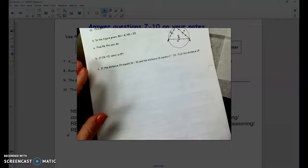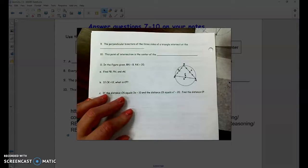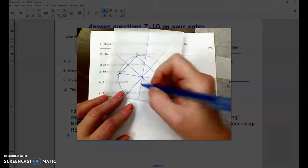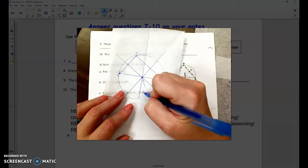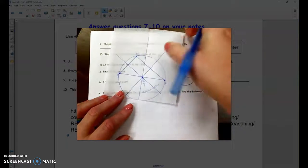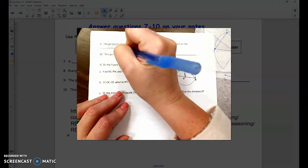Number 9, the perpendicular bisectors of the three sides of a triangle intersect at the, and that was this point R right here. And that point R has a special name called the circumcenter. Circumcenter is where the three perpendicular bisectors intersect.